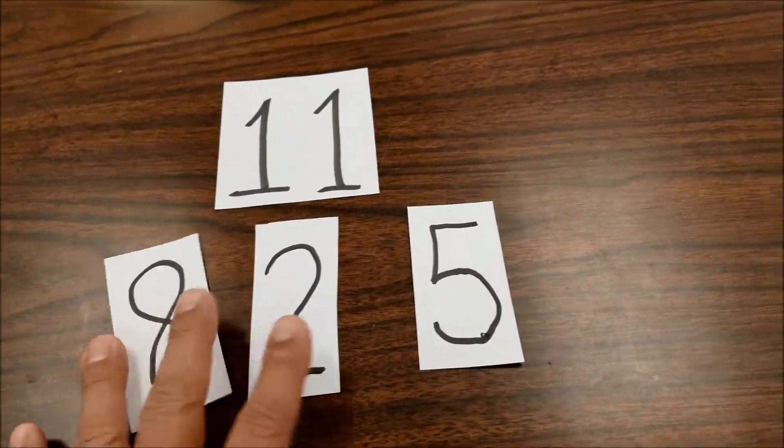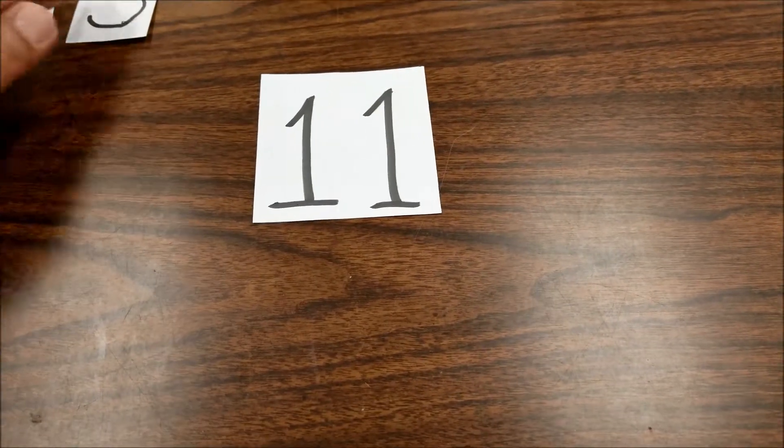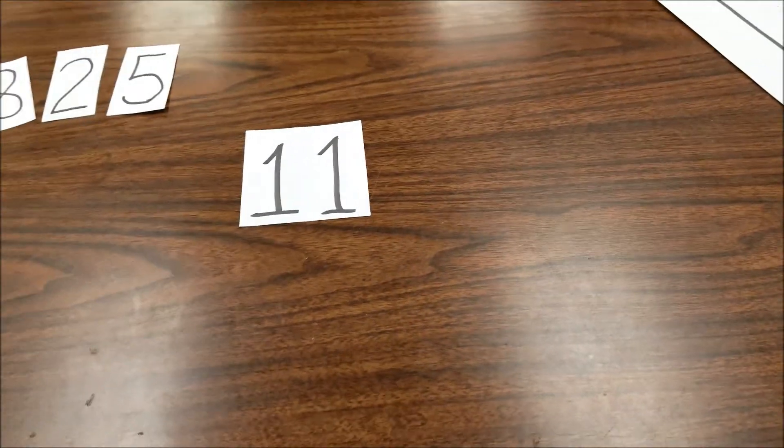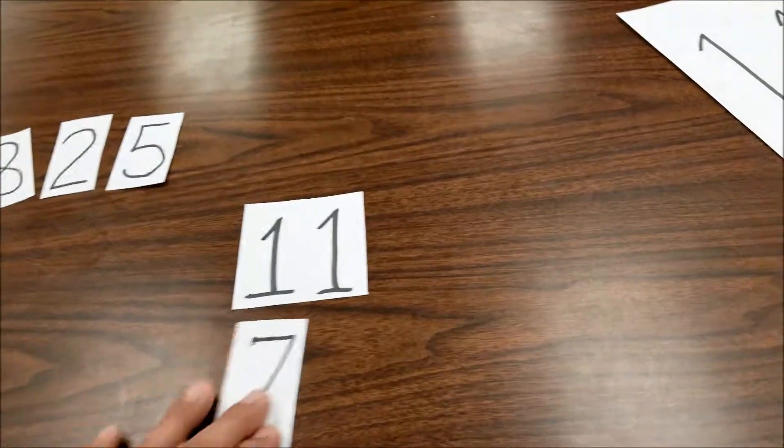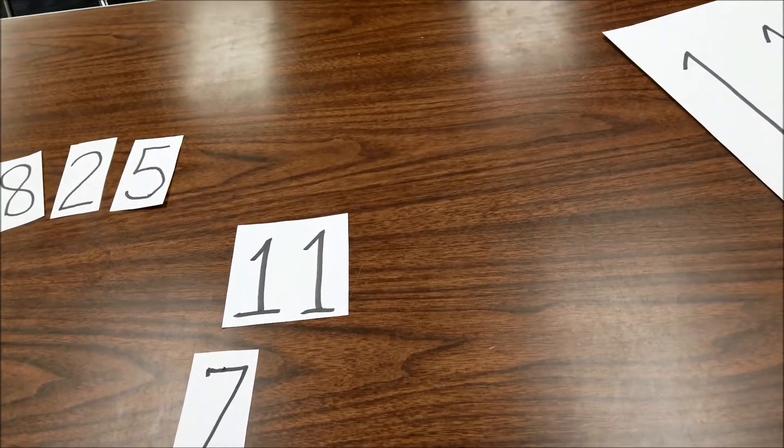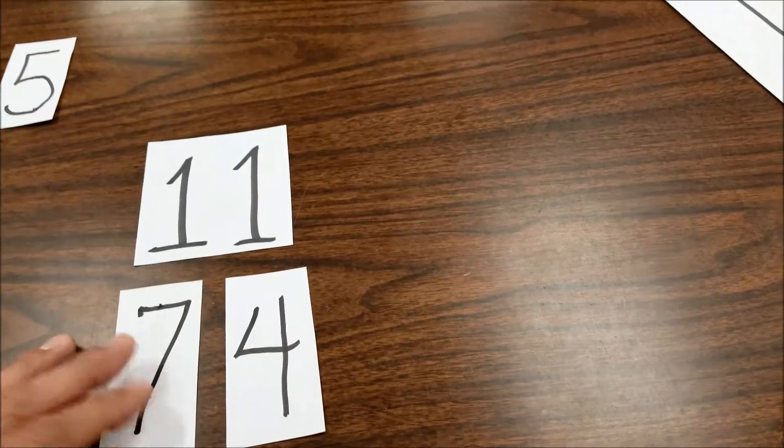So this again blew my mind. I'm like, what? Okay, so let's try another number here. If you want to see that regrouping again, let's pick a number where we'd have to regroup again. So 11 times 74.